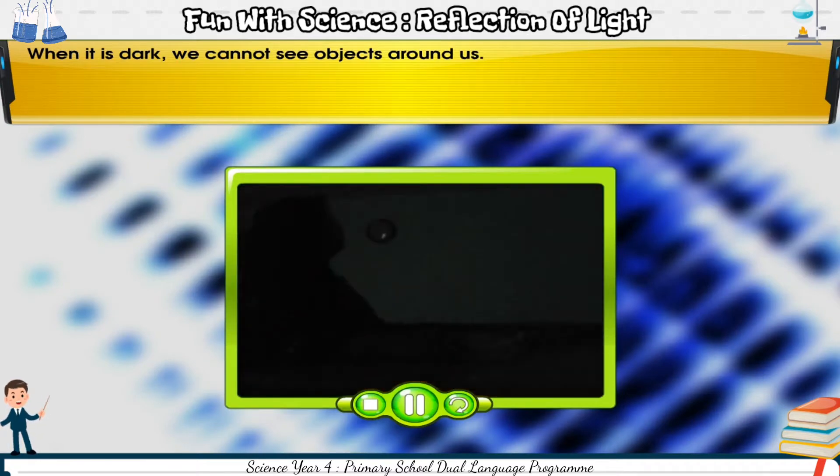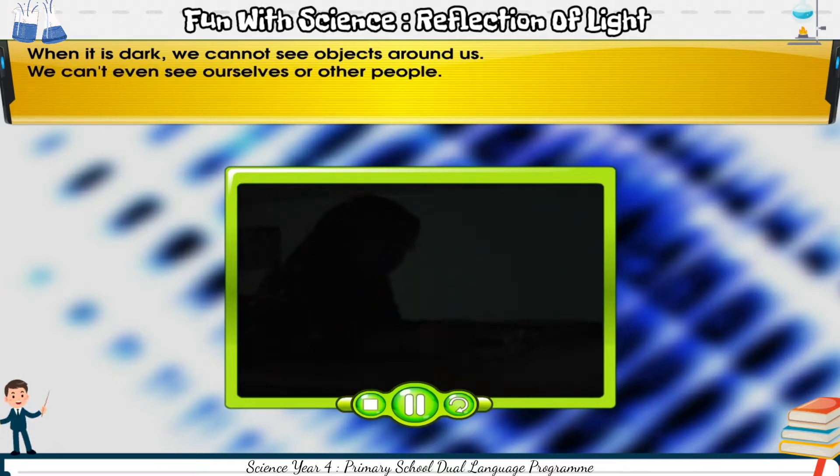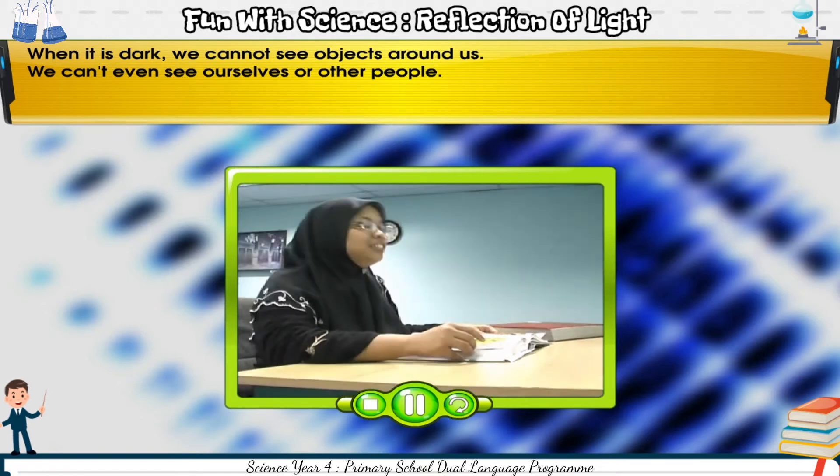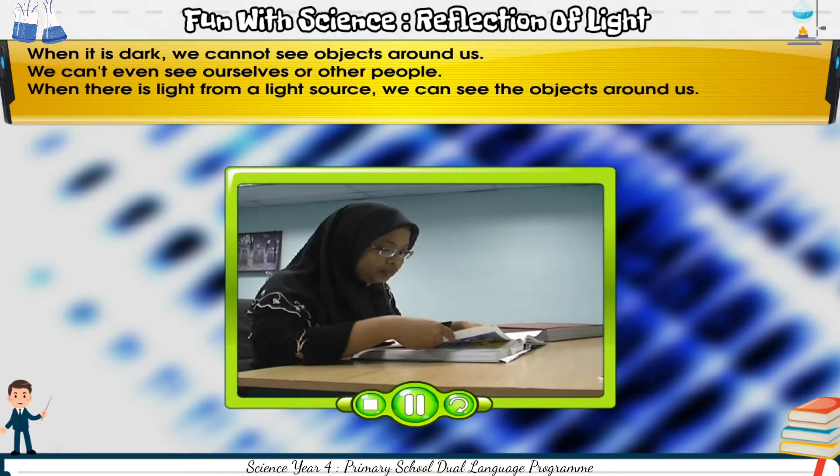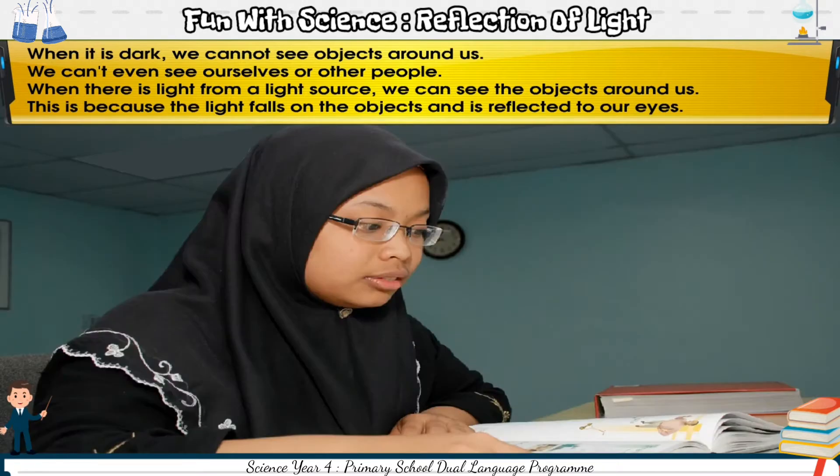When it is dark, we cannot see objects around us. We can't even see ourselves or other people. When there is light from a light source, we can see the objects around us. This is because the light falls on the objects and is reflected to our eyes.